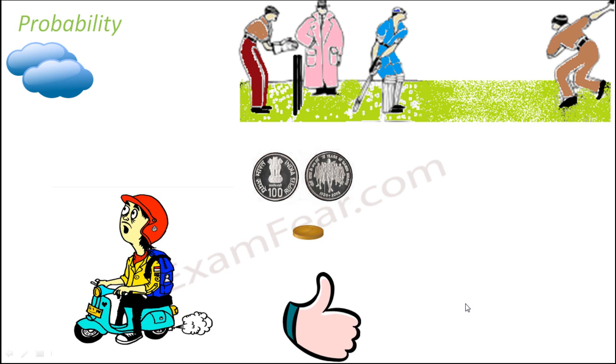When you play cricket and when the batsman bats, it might be a six, it might be a four, it might be a two, it might also be out. So we do not know what is going to be the outcome. So these are all possibilities that might be the result of the action of the batsman.